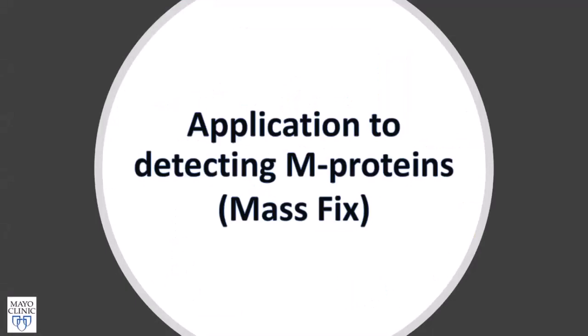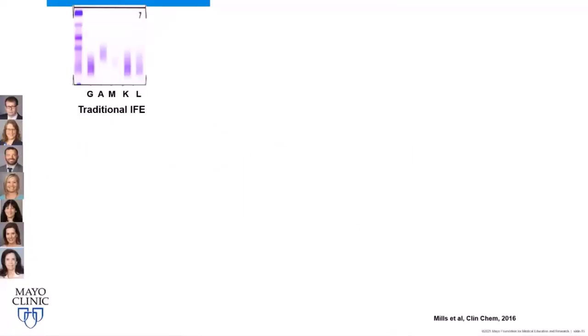Now moving to detection of M proteins — this is the Mass Fix method. Our lab has been doing protein electrophoresis since 1967. Traditionally, patient serum is run on a gel six times, proteins are separated under current, then fixed. We identify albumin, IgG, IgA, IgM, kappa, and lambda — that's been the standard for calling M protein isotypes.